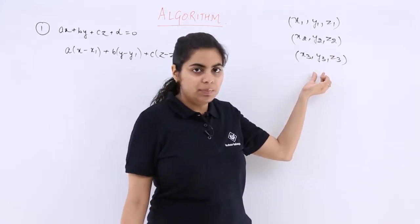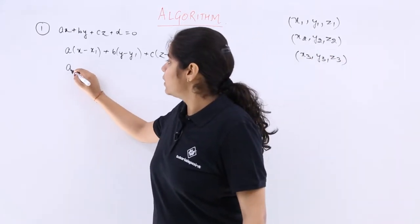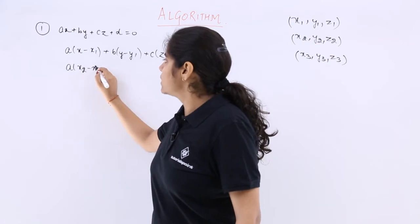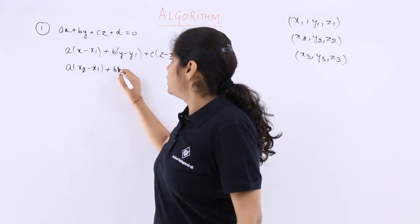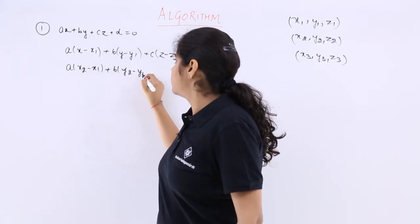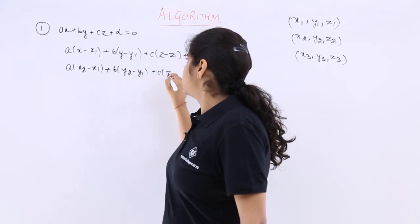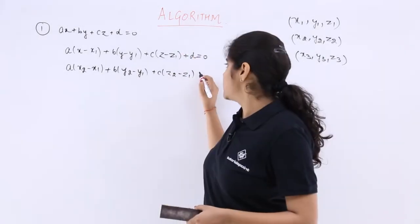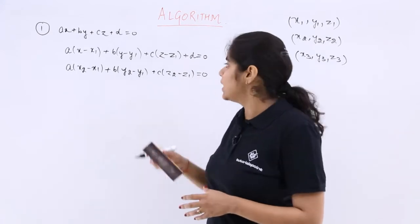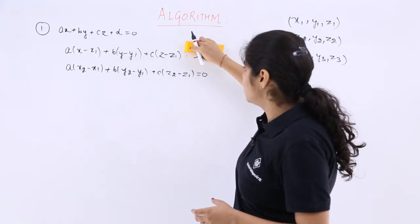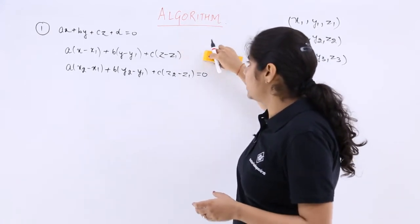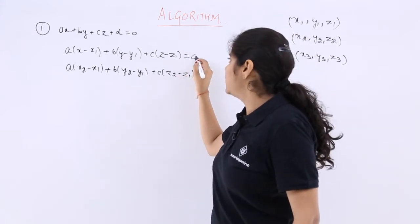Now similarly, these both points also lie on the plane, so the rest of the equation would be A into x2 minus x1 plus B into y2 minus y1 plus C into z2 minus z1 is equal to 0. And this you have to take care that here it will not be plus D. Plus D will only be in the general form of the equation. So here also it will be directly equal to 0.